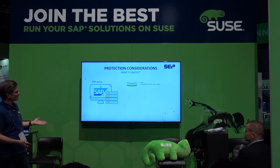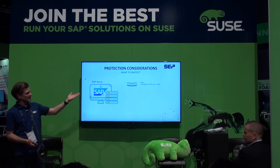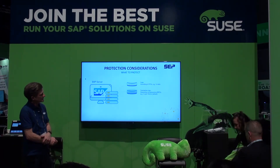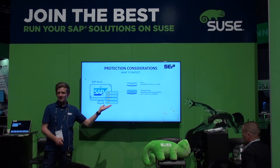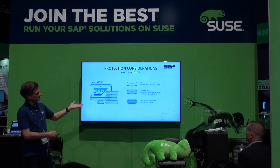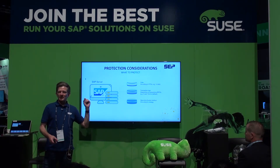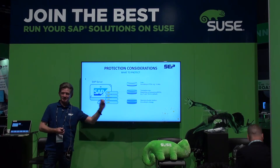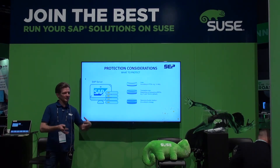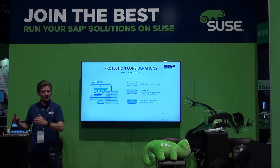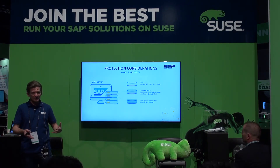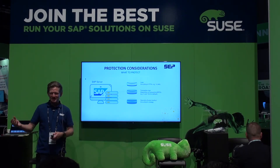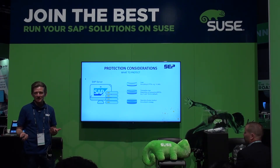What do you protect in a HANA or SAP environment? The data — maybe you back that up once a day according to your RPO. Transaction logs — maybe once every 15 minutes. And then the operating system — that should be a bare metal recovery. We're talking about backing up data, databases, logs, and files, but also backing up the operating system and recovering to dissimilar hardware after a failure. If you have a SLES server that's four years old and it goes down, you can spin it up on another VM using our bare metal recovery feature.